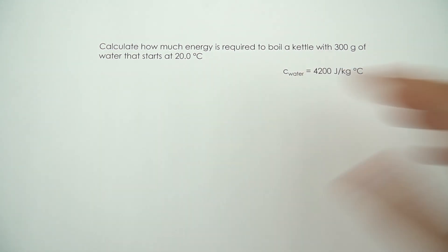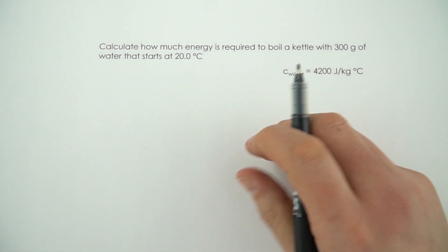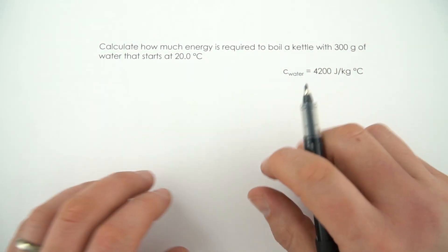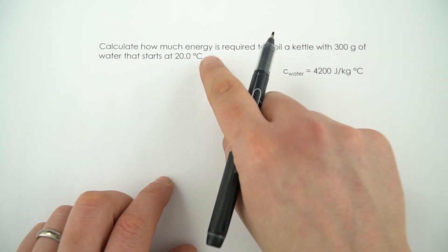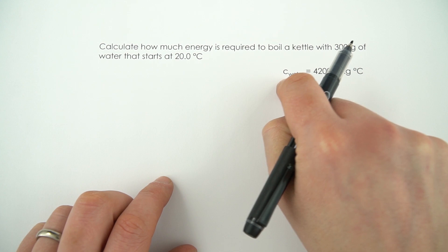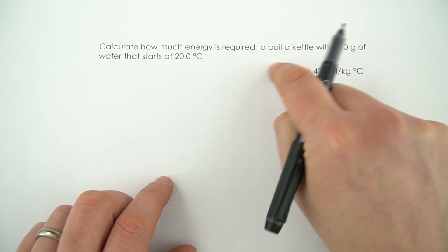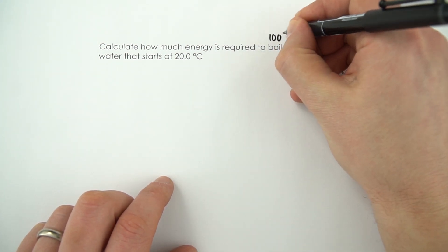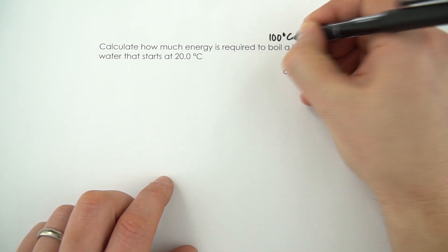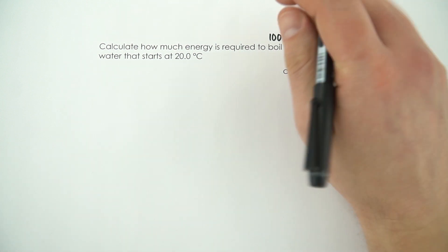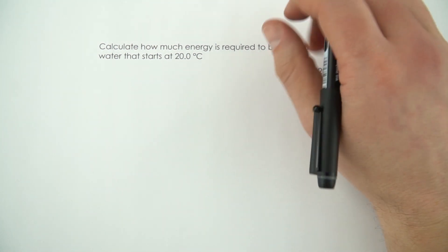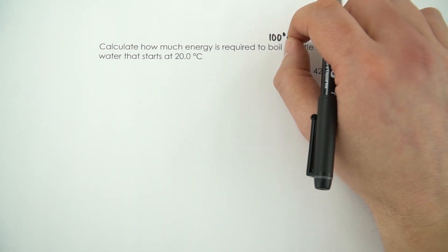There are a couple of assumptions we're going to make. First of all, that there's no energy being transferred to the kettle itself, so all of the energy transferred goes into the water. Secondly, if the kettle is boiling, it boils at 100 degrees celsius — this is information that's implied but not actually given as a number in the question.